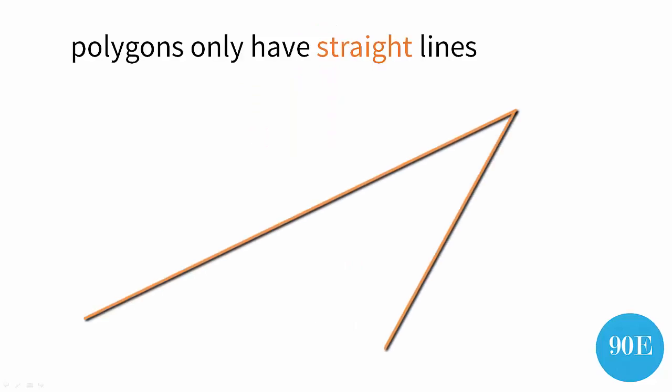But what are polygons? Well, polygons are a type of shape that are made up of only straight lines.